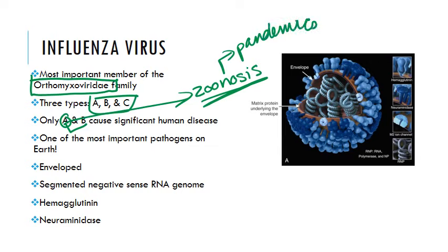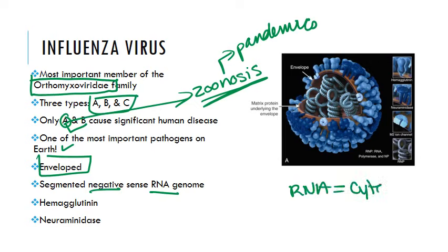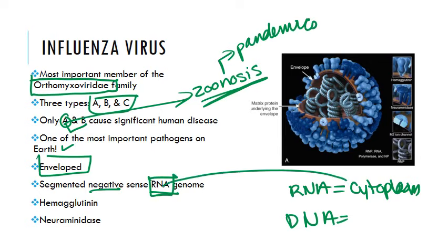It's one of the most important pathogens on Earth. As far as its structure goes, this is an enveloped negative-sense RNA virus. Most RNA viruses replicate in the cytoplasm and most DNA viruses replicate in the nucleus, but this one is a little bit strange — it's one of those important distinctions between orthomyxoviridae and paramyxoviridae. This is an RNA virus that does kind of both, replicating sometimes in the cytoplasm and sometimes in the nucleus.